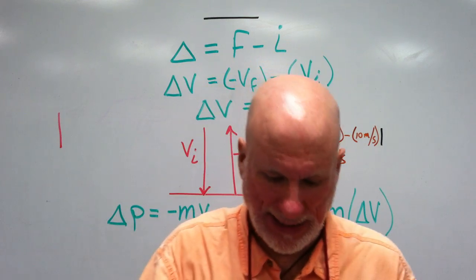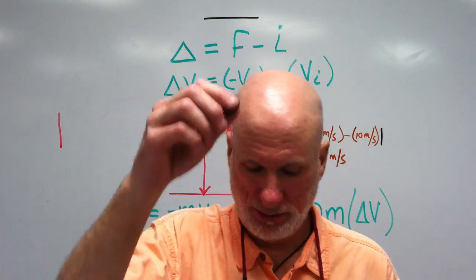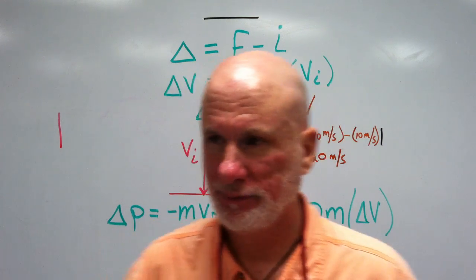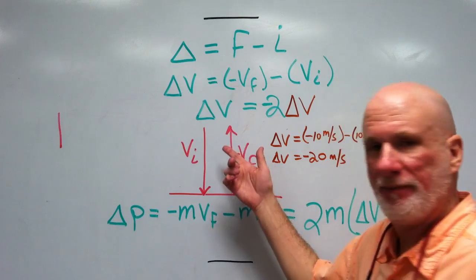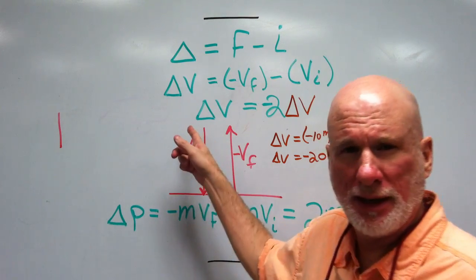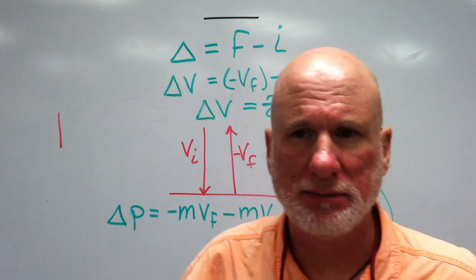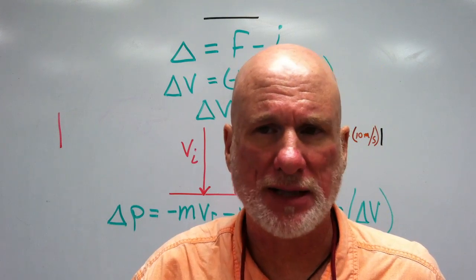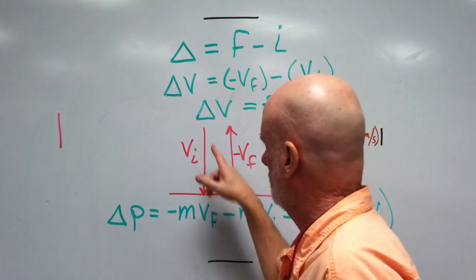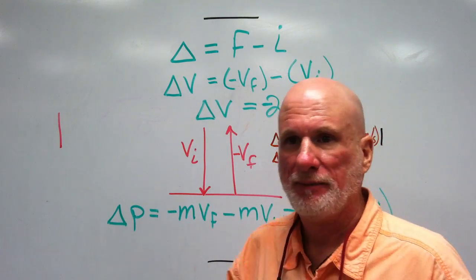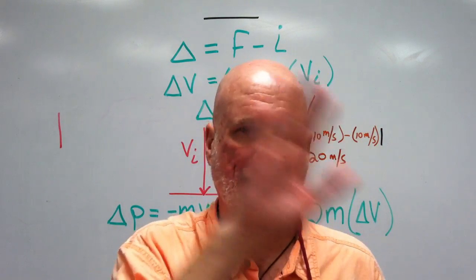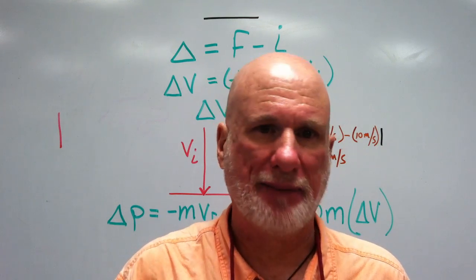An inelastic collision would be no bounce. Boom. Done. So, let's say I have an incoming ball and it's going to have a velocity, initial velocity VI, and it's going to bounce. And let's say it's perfectly elastic. So, VI and VF are the same.